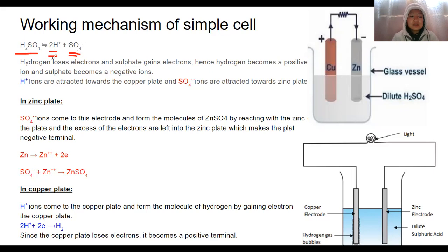Now, these ions move to two different electrodes, two different metallic plates. Hydrogen ions move towards copper plate and sulfate ions move towards zinc plate. Now, why is this happening? Let me explain.